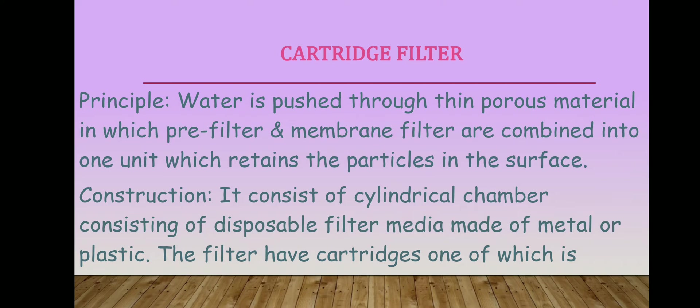What does the pre-filter do? First, you remove larger particles so that the membrane filter removes particles of micron size. So filtration happens in two steps — basically you work on pressure. With pressure, your water or whatever liquid is passed through the pre-filter first, and then the membrane filter. These two filters are combined into one unit. Undesirable particles are retained on the surface while liquid passes through.